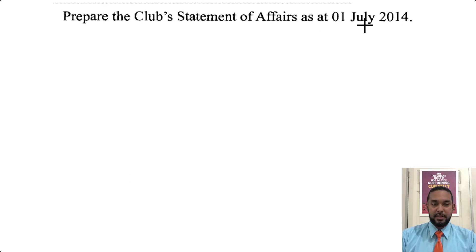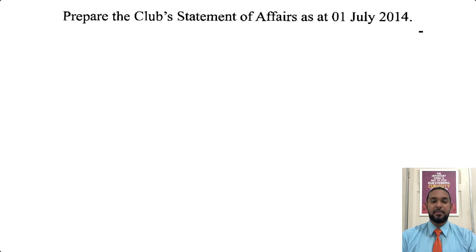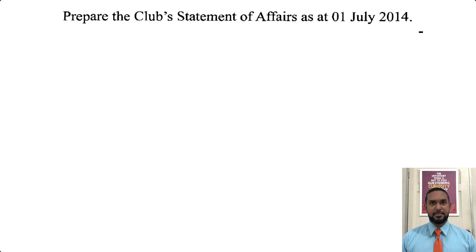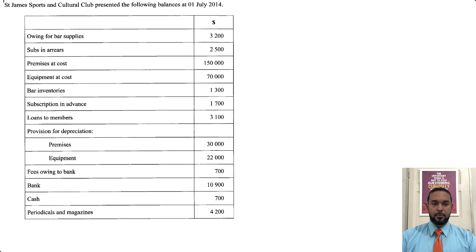So they want us to prepare the club's statement of affairs as at 1st July 2014. A statement of affairs is basically a capital calculation — assets minus liabilities. But because it's a non-profit organization, they don't call it capital; they call it accumulated fund. So let me scroll up so we can see the question.